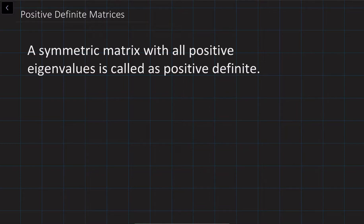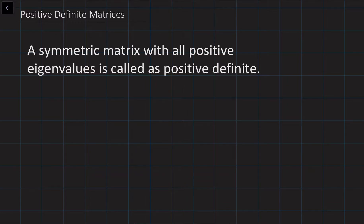In a previous lecture we defined what a positive-definite matrix is. A symmetric matrix with all positive eigenvalues is called positive-definite. In order to identify this, we figured out an algorithm.